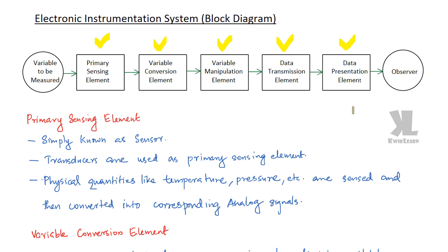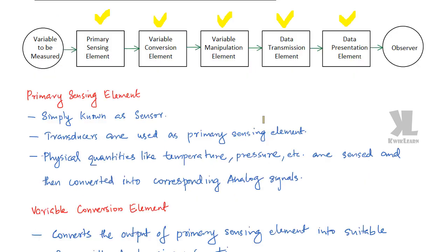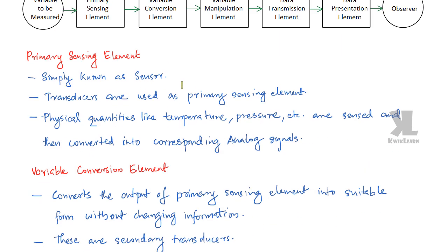The primary sensing element is simply known as the sensor. When we measure the variable, the sensor is the primary sensing element. For example, if we are sensing temperature, the temperature sensor is the primary sensing element. Transducers are the primary sensing element — it is a device which is capable of converting energy from one form to another form.